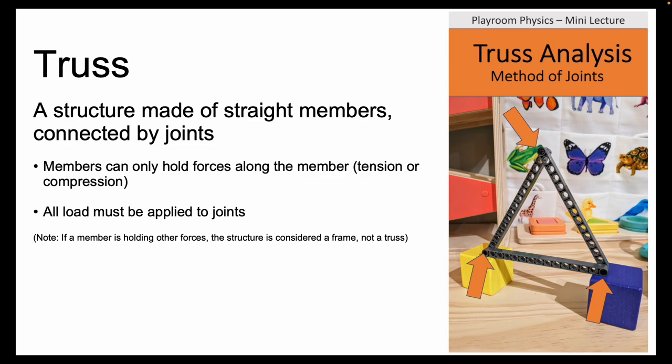Trusses are rigid structures made of members connected at joints. Each member is made to hold only axial loads. Torques or lateral forces are not allowed. Therefore all the loads applied to a truss have to be applied to its joints.